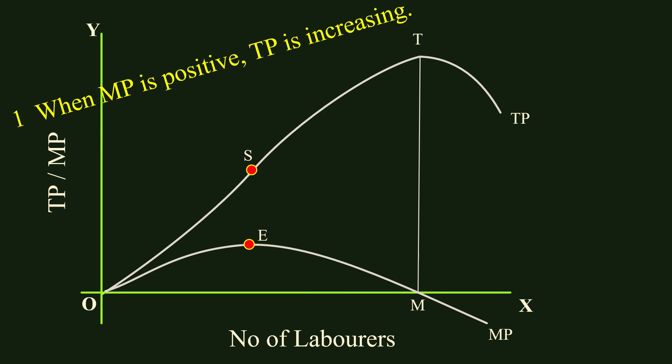First relation: when marginal product is positive, total product is increasing. In the segment OM of the marginal product curve, marginal product is positive. In the corresponding segment OT of the total product curve, total product is increasing.